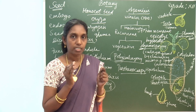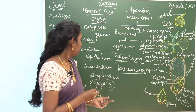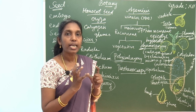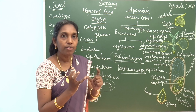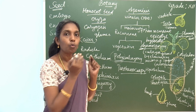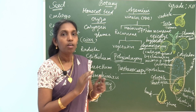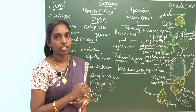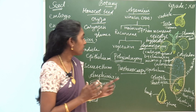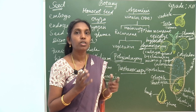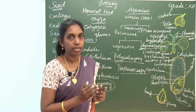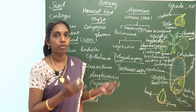Parthenocarpy is the process by which fruit-like structures are developed from the ovary without fertilization. So this process is called parthenocarpy. It may not produce seed — seedless fruit. Nowadays we can see so many seedless fruits, such as grapes, formed by parthenocarpy.